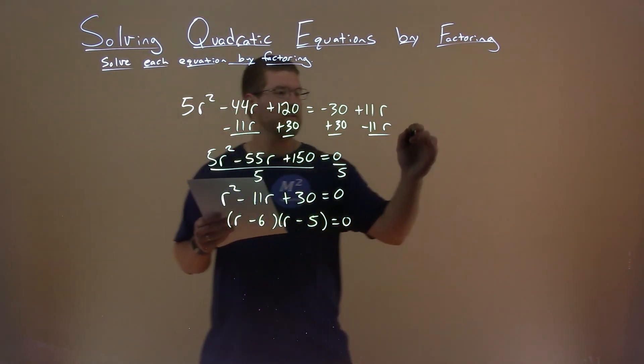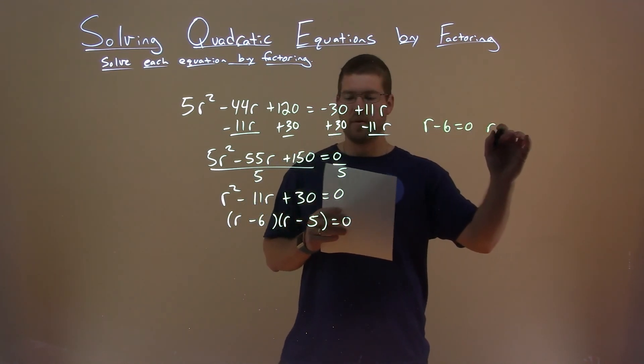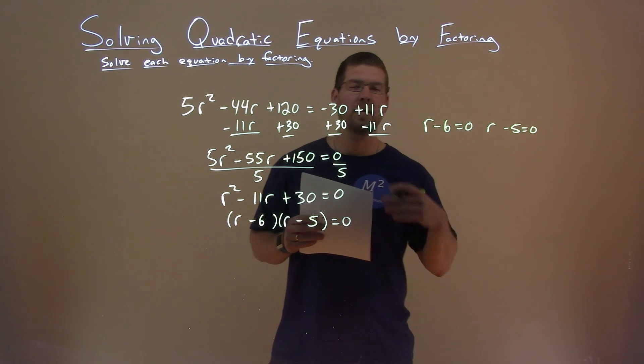Now we can set both parts: r minus 6 equal to 0, and r minus 5 equal to 0. And we're going to solve for r.